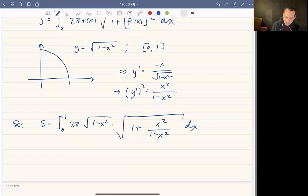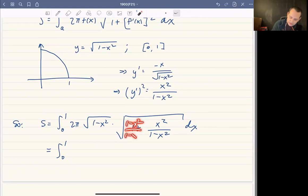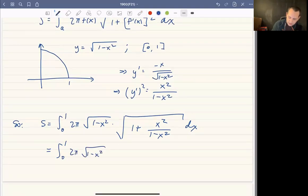This is going to work out even nicer than the formula that we had before, because when you add these together, this is one minus x squared over itself, okay, and so you end up with 2π square root of one minus x squared times